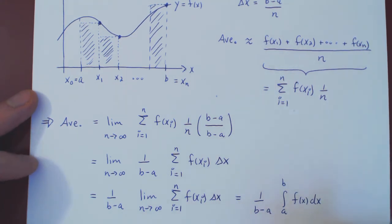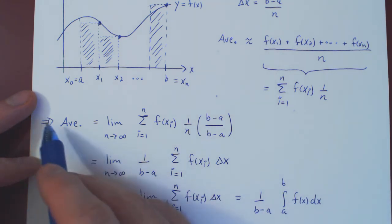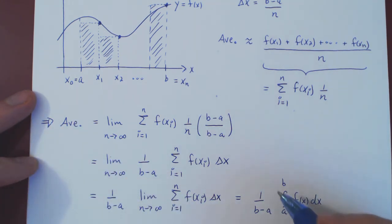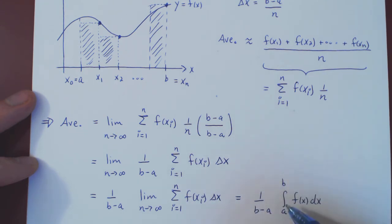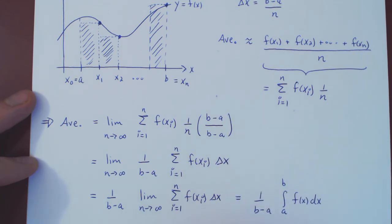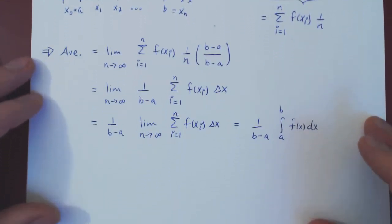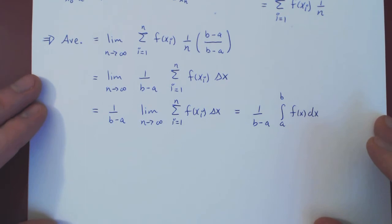This gives a very elegant formula. To compute the average of a function over an interval from a to b, it suffices to integrate the function over the interval and multiply by 1 over the length of the interval, 1/(b − a).